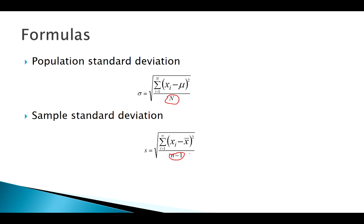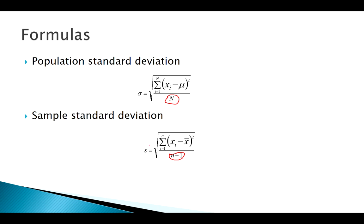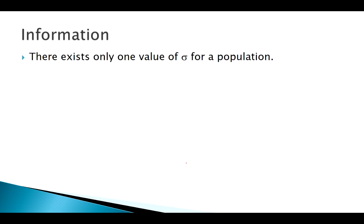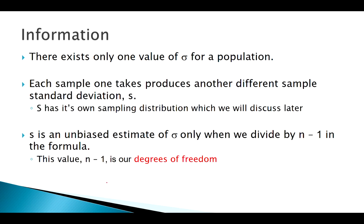That value of n minus one keeps S as an unbiased estimate of Sigma. That quantity n minus one is what we call our degrees of freedom, and it's going to be important in our T distribution discussion.